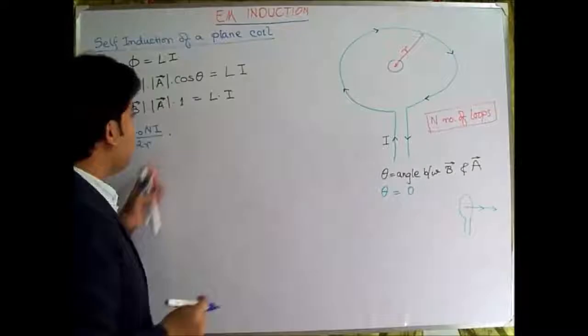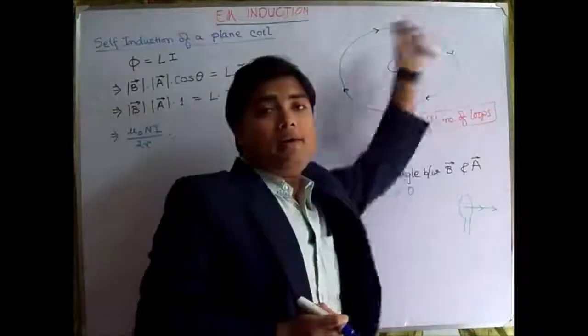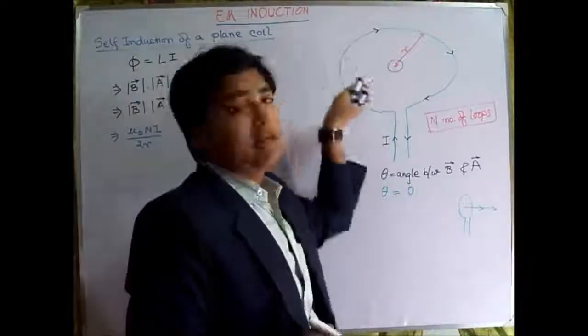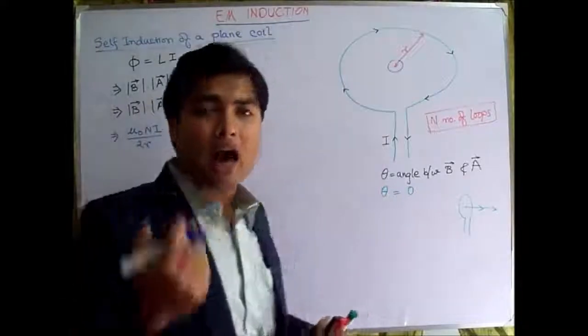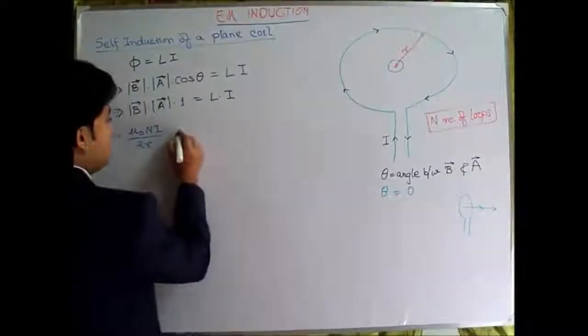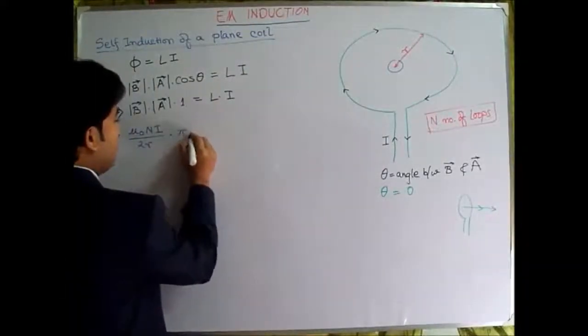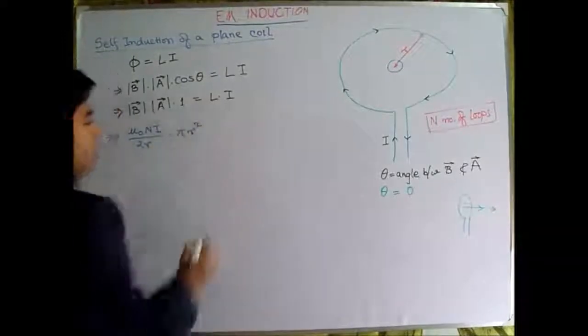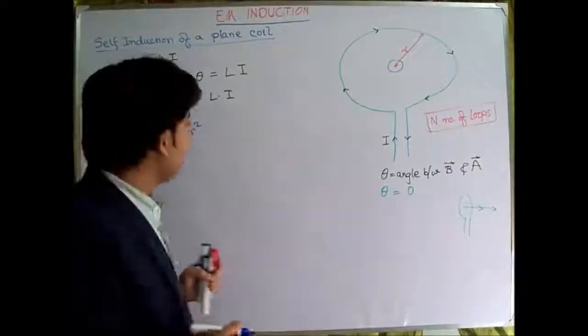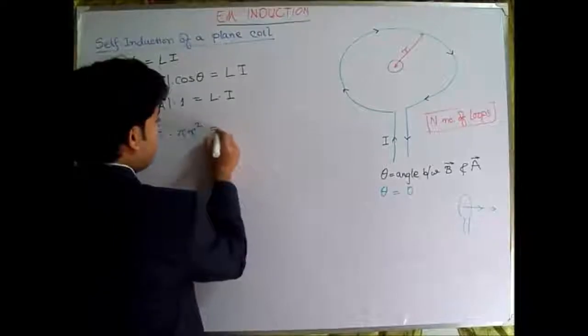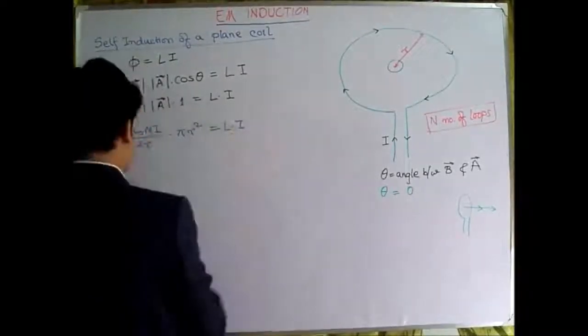Multiplied by what will be the area of this plane. Simply, this is a circle of radius R, that will be πR², so this will be equals to L multiplied by I.